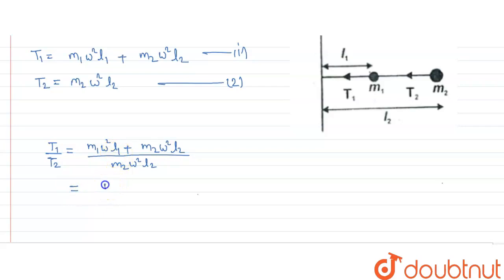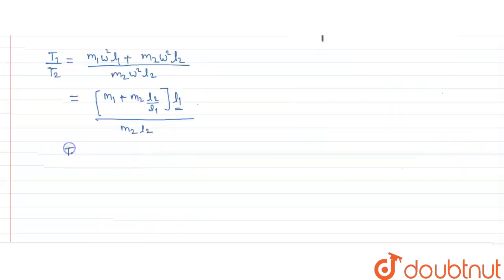Taking L1 common, we get M1 plus M2 L2 upon L1, upon M2 into L2. Now we will put this L1 in denominator, and we get T1 by T2 equal to M1 plus M2 L2 by L1 upon M2 L2 by L1.